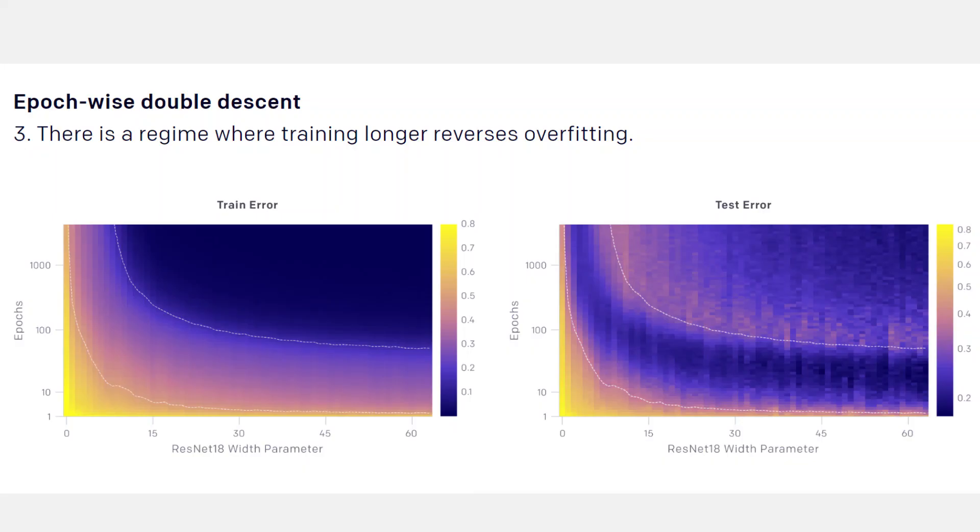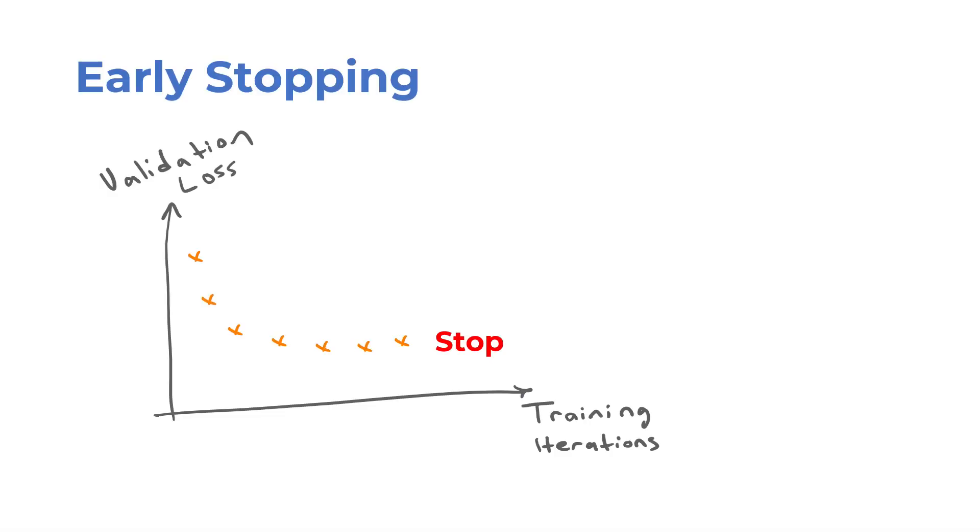The same applies to the number of training iterations, since training a model for longer iterations can increase its effective capacity. It's a common practice to stop training once the validation error stops improving and the model starts overfitting. However, at some point, the training process may enter a regime where training longer reverses overfitting.